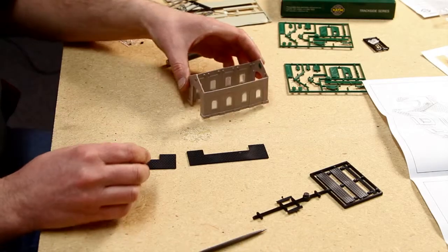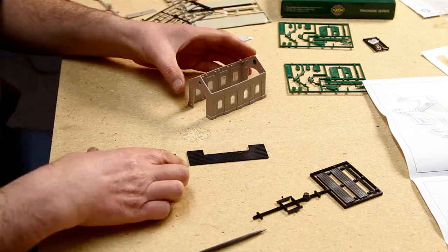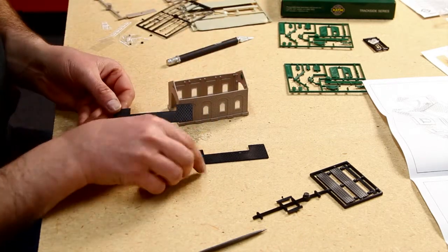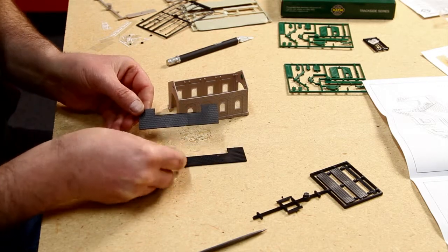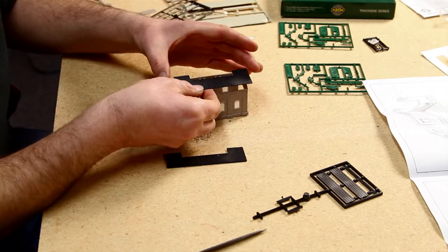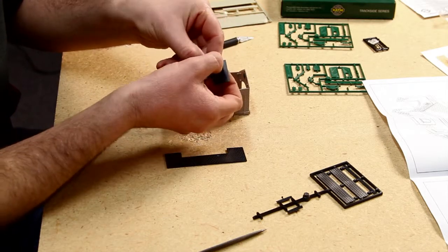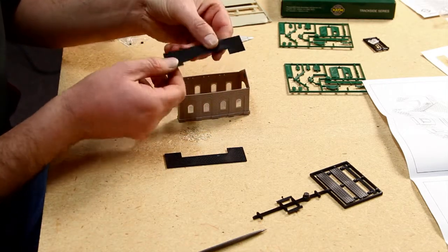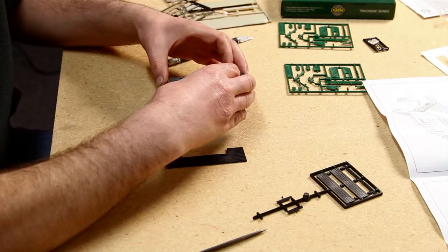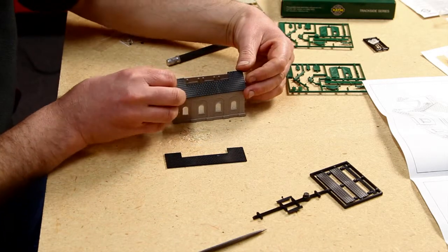Once you have your four sides all nicely glued together and as square as humanly possible, then it's time to fit the roof. Now your roof comes in two halves. It's a slate roof. It's got a little wee cut out in it and that goes at the top. There's also a couple of wee knobs at either end and they sit on the insides of the wall.